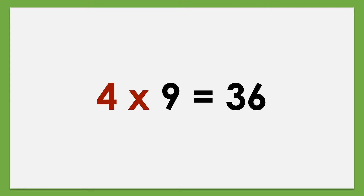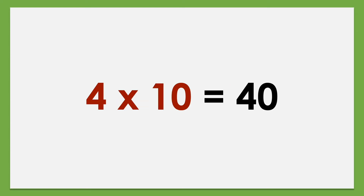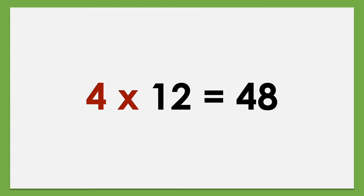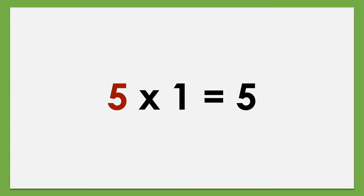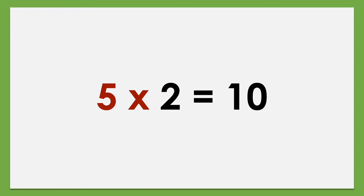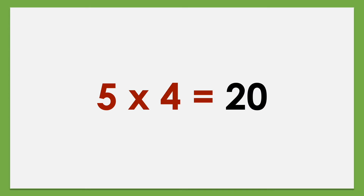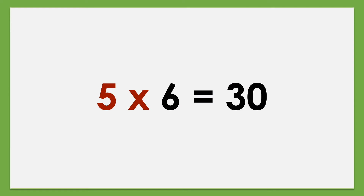4 times 8 equals 32, 4 times 9 equals 36, 4 times 10 equals 40, 4 times 11 equals 44, 4 times 12 equals 48. Set of 5: 5 times 1 equals 5, 5 times 2 equals 10, 5 times 3 equals 15, 5 times 4 equals 20, 5 times 5 equals 25, 5 times 6 equals 30, 5 times 7 equals 35.